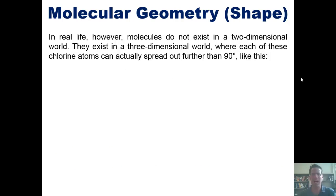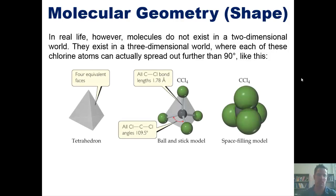However, in real life we don't live in a two-dimensional world like this flat screen you're staring at. Molecules exist in a three-dimensional world where each of these four chlorine atoms can actually spread out a little bit further than 90 degrees like this. What this is trying to do is show you three-dimensionally that in real life carbon tetrachloride has its central carbon atom like this and each of these chlorines is poking out a little bit further than 90 degrees because it's not flat.